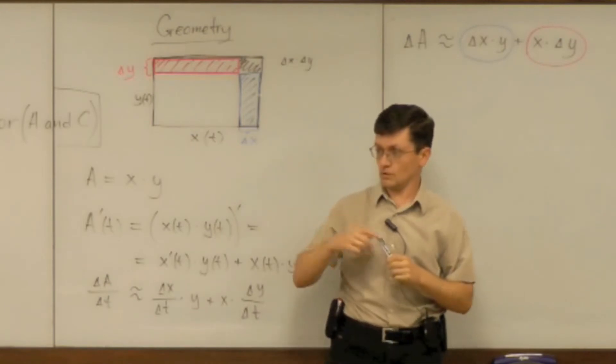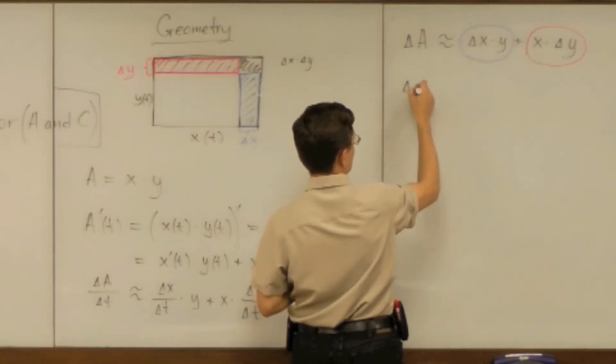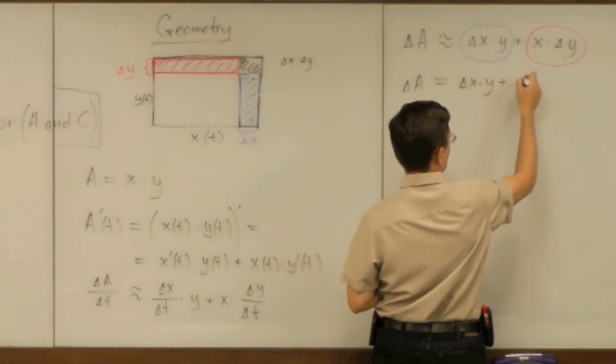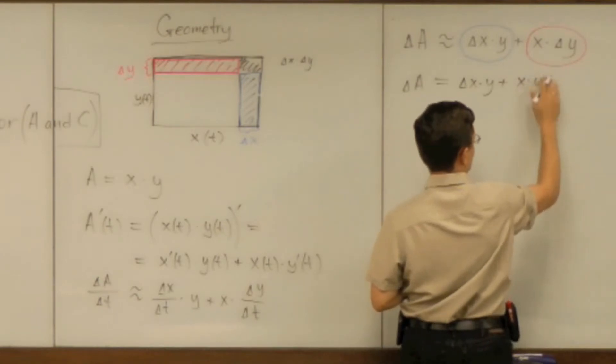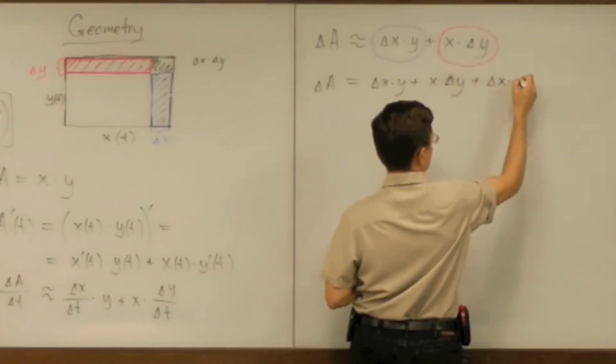So in this example we can see what the exact equality should be. Delta a should be equal to delta x times y plus x times delta y plus delta x times delta y.